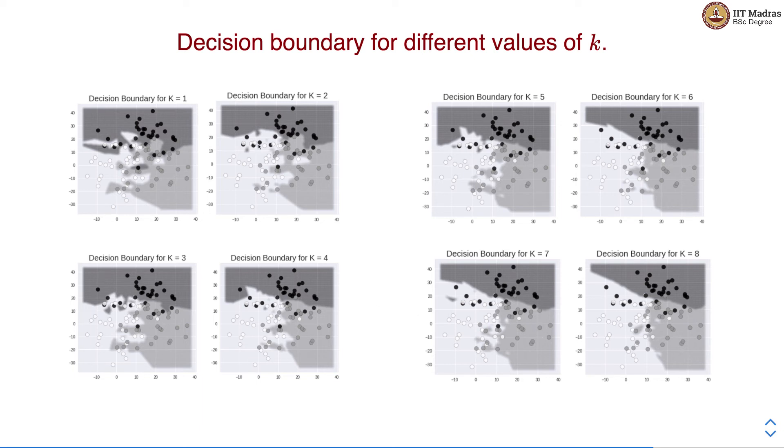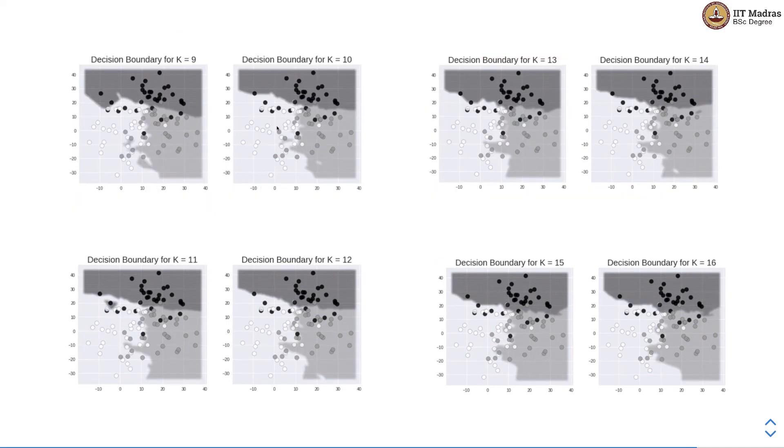So here for K equal to 1, 2, 3 and 4 the decision boundary is quite jagged. But as you move towards something like K equal to 6, 7, 8 the decision boundary is far more smoother compared to what we see when K was smaller. And as we move further the decision boundary becomes more and more smoother.